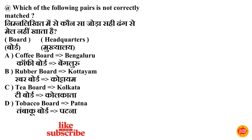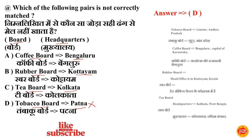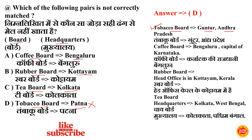Next question: which of the following pairs is not correctly matched? Left hand side hai Board, right hand side hai Headquarters. Option A — Coffee Board: Bengaluru. Option B — Rubber Board: Kottayam. Option C — Tea Board: Kolkata, West Bengal. Option D — Tobacco Board: Patna. Tobacco Board Patna mein sthit nahi hai. Correct option is Option D. Tobacco Board sthit hai Guntur, Andhra Pradesh. Coffee Board: Bengaluru, Karnataka. Rubber Board: Kottayam, Kerala. Tea Board: Kolkata, West Bengal.